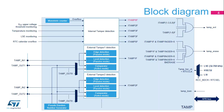Here is the TAMP block diagram. Several internal features can generate a tamper event: VDD upper voltage threshold monitoring, temperature monitoring, LSE monitoring, RTC calendar overflow, and monotonic counter overflow.